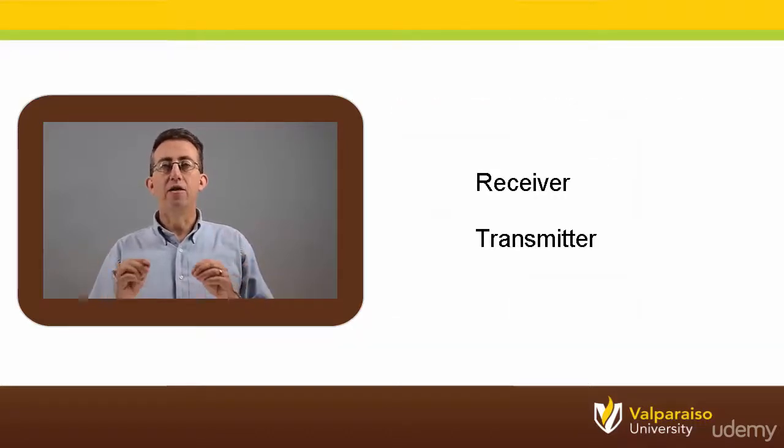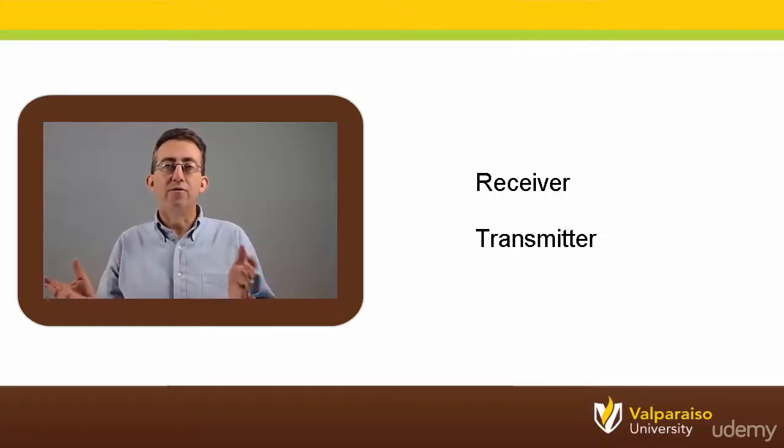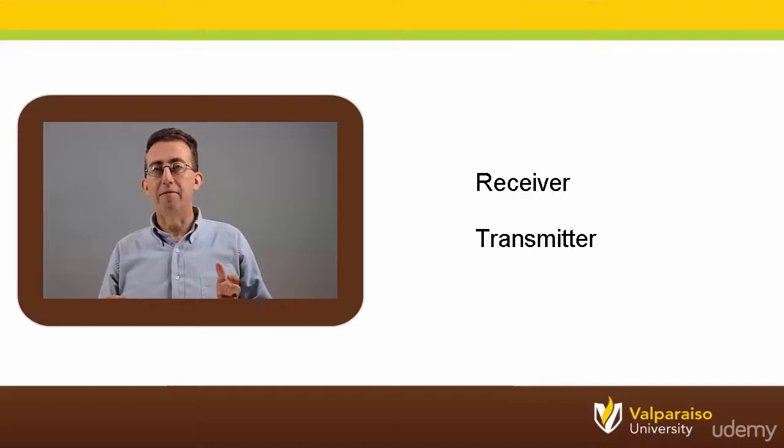Finally, the UART peripheral can be used for both transmitting information to the outside world and receiving messages from the outside world. You can think of this essentially as a telephone. You can both talk and hear at the same time.